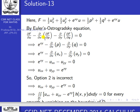Then ∂F/∂p = (1/2)(2p) = p, and ∂F/∂q = (1/2)(2q) = q. So the equation becomes: e^(xy) − (∂/∂x)(p) − (∂/∂y)(q) = 0.